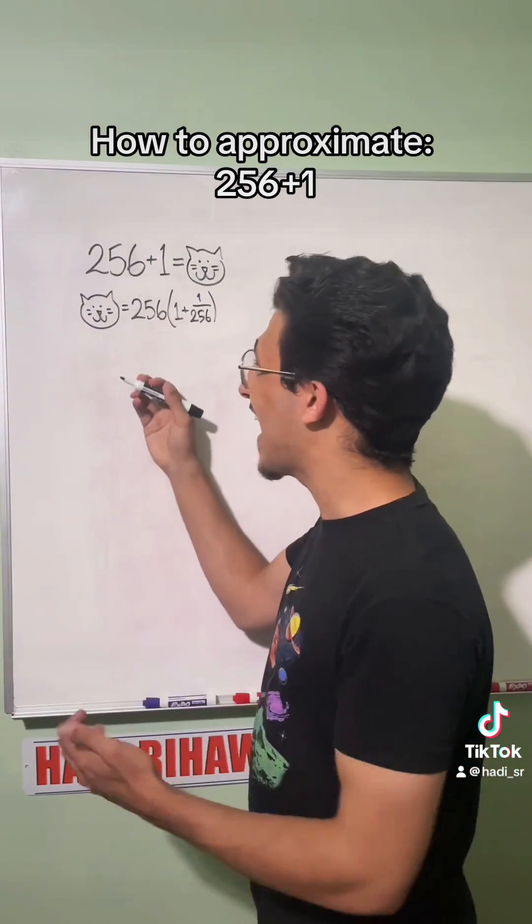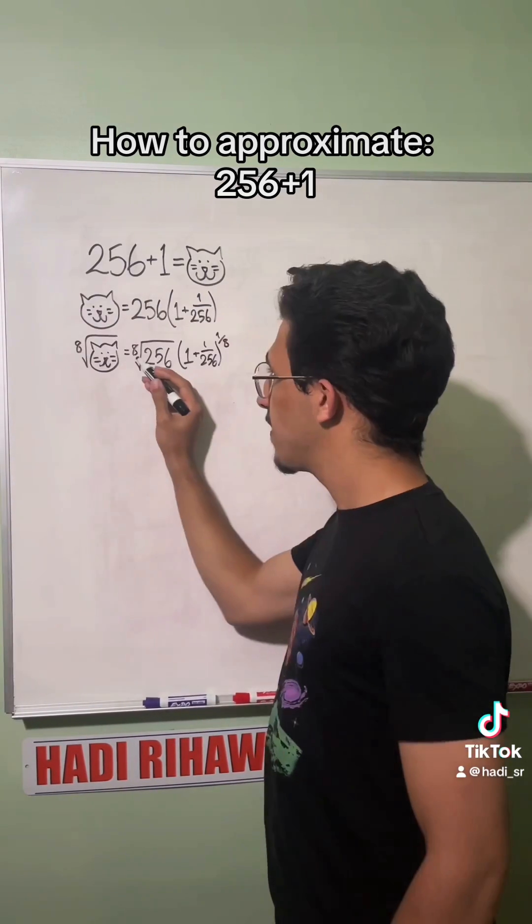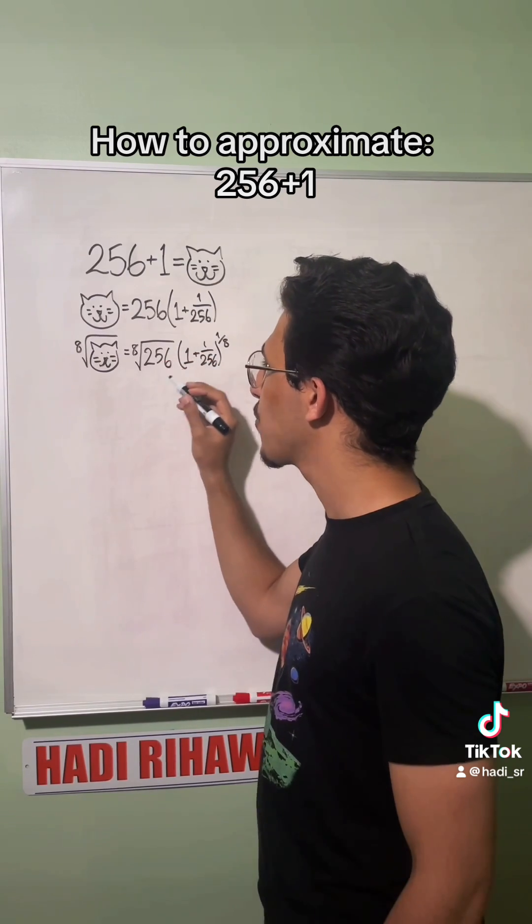Next step that I did in my video is I took an eighth root on both sides. So if I do something to the left side I have to do it to the right side. This eighth root is the same as to the one eighth power. Next step, we see that 256 is 2 to the eighth power, so the eighth root of 256 is just 2.